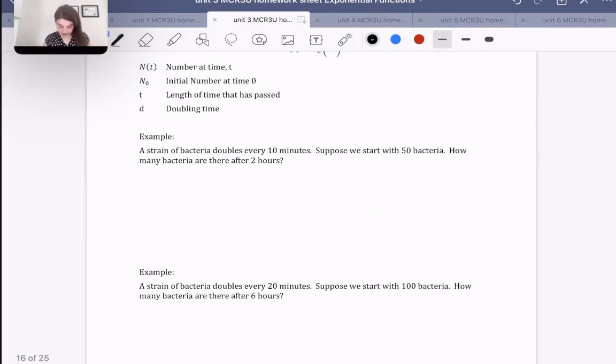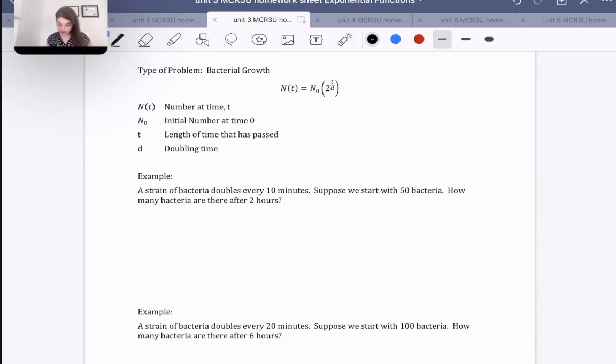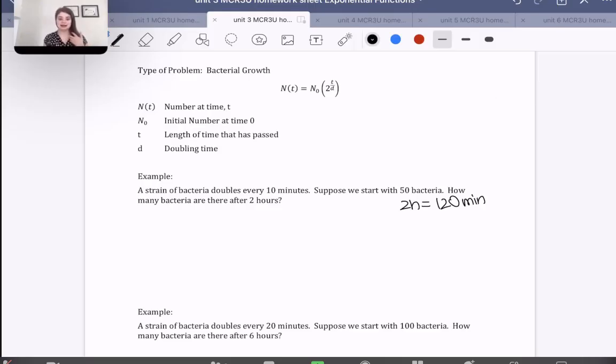Let's go for an example here. It says a strain of bacteria doubles every 10 minutes. Suppose we start with 50 bacteria. How many bacteria are there after two hours? So, two hours is equal to 120 minutes. We have to make sure that because it doubles every 10 minutes, we either switch these both to hours or we could say that two hours is the same as 120 minutes. I would much prefer to say 120 minutes so we're not dealing with fractions or decimals. As long as both are the same units, that's what matters.